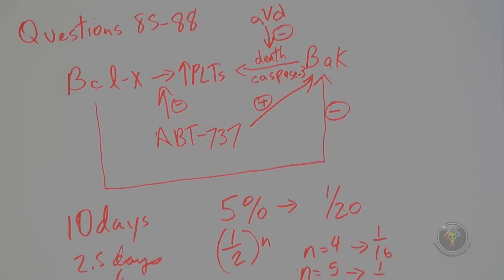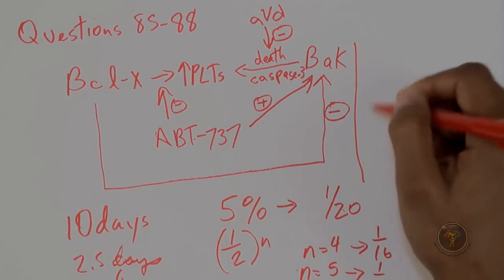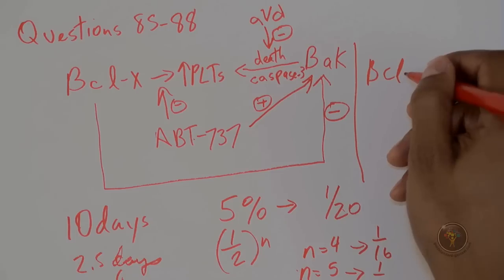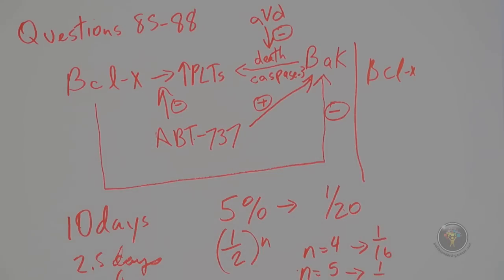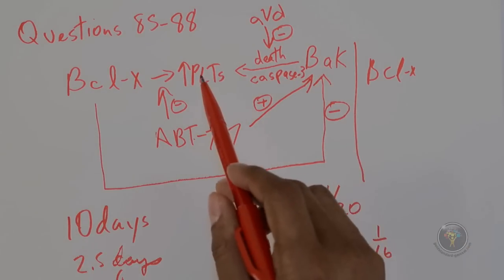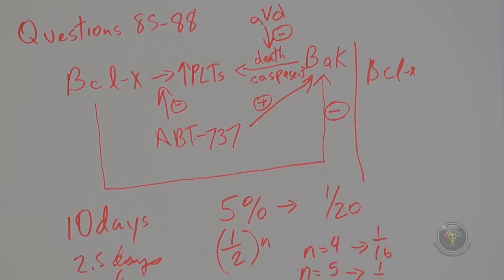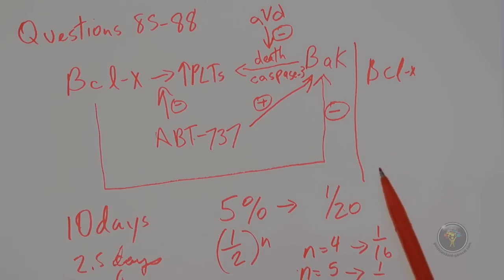For question 87, which is most strongly suggested by Figure 1B? Looking at the first three trials, BCL-x is constant. BAK is going down — indicated by negative signs — and as BAK decreases we see an increase in platelet count, which is expected.